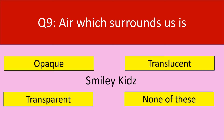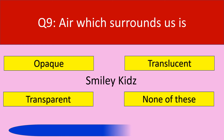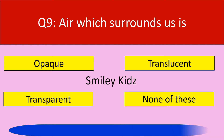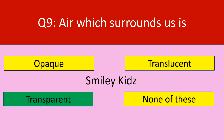Question number nine. Air which surrounds us is — options are opaque, translucent, transparent. Your time starts now. Your time is up. The correct answer is transparent. Air which surrounds us is transparent.